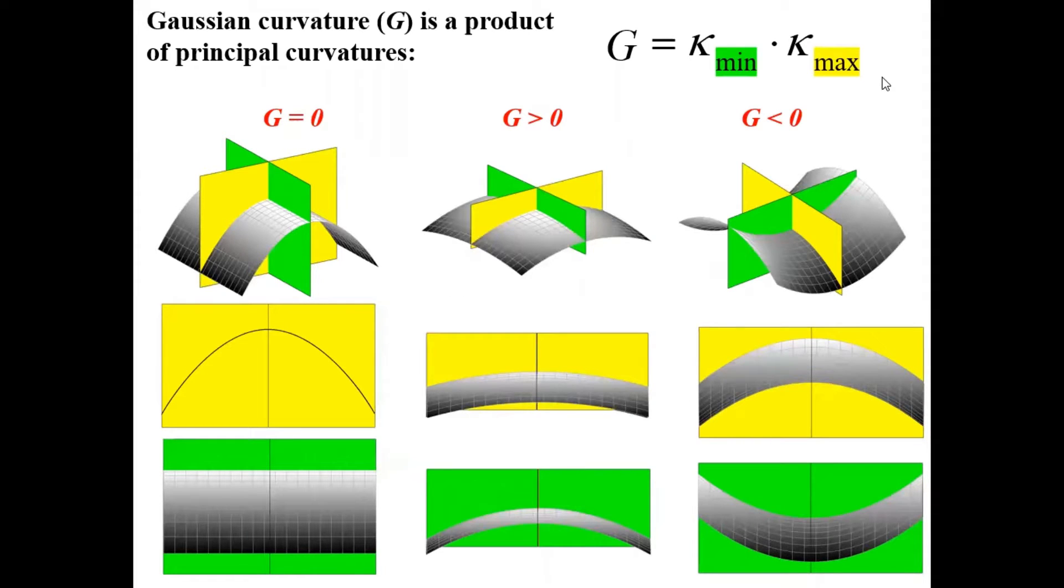Gaussian curvature is a product of principal curvatures, which are the minimal and maximal curvature of curves that are at the intersection between our surface and its normal planes.